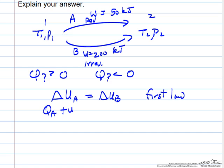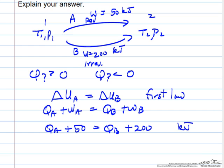QA plus WA, QB plus WB. So QA plus 50, QB plus 200, these are all in kilojoules. So that says QA equals QB plus 150 kilojoules.